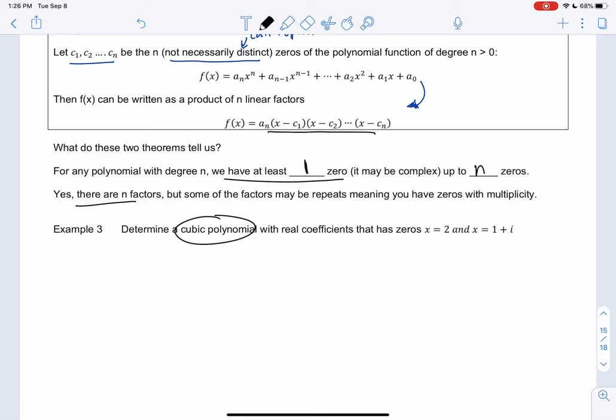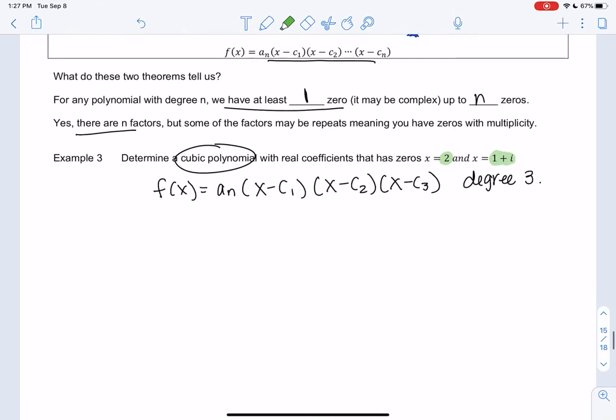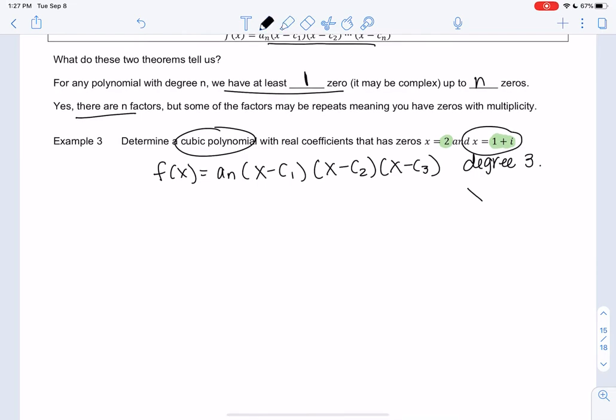So what that theorem tells me is it's degree 3, so we have three factors. So f of x will be a sub n, x minus c1, x minus c2, and x minus c3 for degree 3. So we have to figure them out. So we know one of them is 2, and we know one of them is 1 plus i, so that means we're missing one of the 0s. As I mentioned in the beginning of the chapter, it's the conjugate. So if x equals 1 plus i is a 0, so is the conjugate x equals 1 minus i.